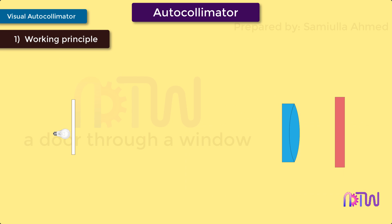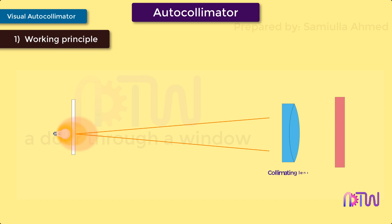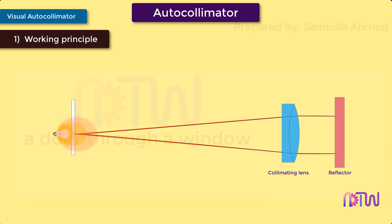A light ray passing from a collimating lens strikes on a plane reflector and gets reflected back in the same path. This happens only if the plane reflector is perpendicular to the incident rays. In this case, the reflected rays fall at the same point from where they were projected, that is at point O.